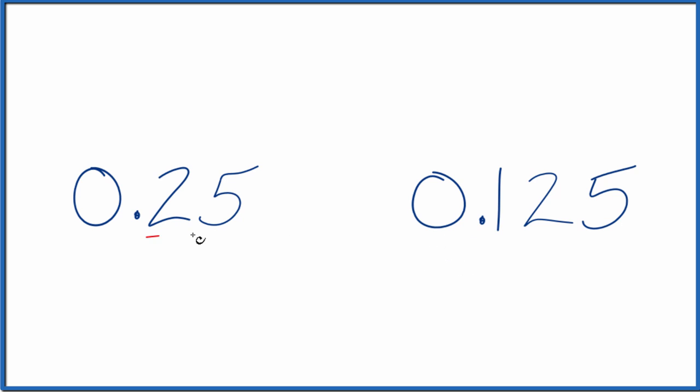And we go to the next digit, the 2. And that's why 0.25 is greater than 0.125. That's probably the easiest way to tell.